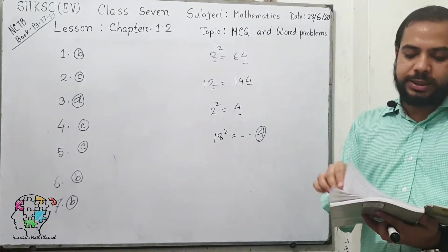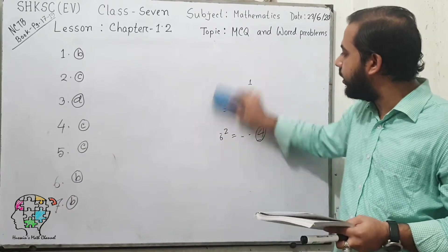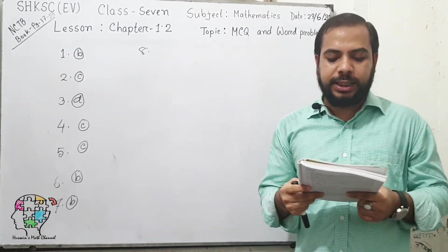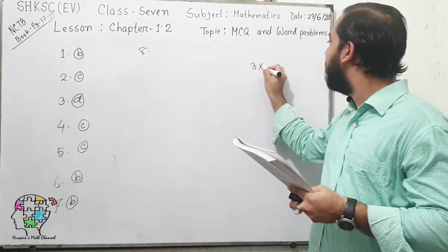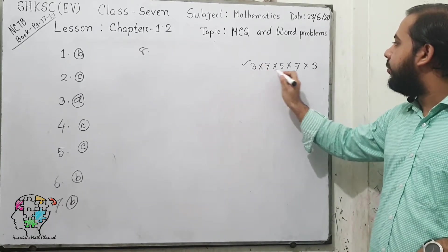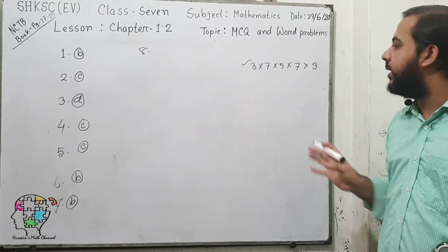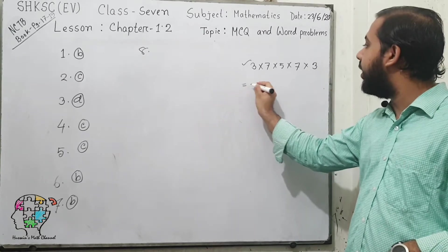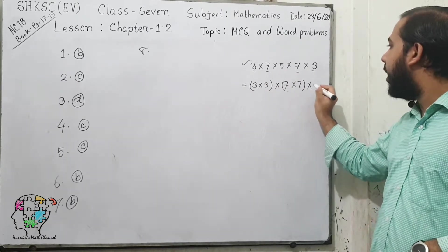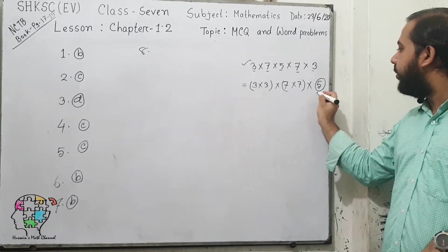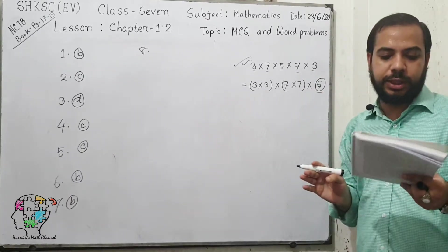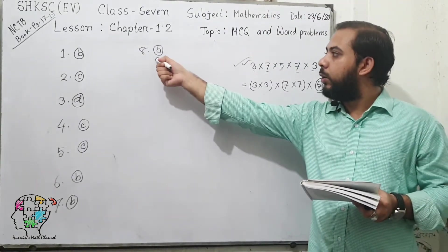Now move on to page number 18 for another MCQ. Question number 8: by which number should the multiplication or division of 3×7×5×7×3 be done to make it a perfect square? To make it a perfect square, we need to find pairs. 3 has a pair and 7 has a pair, but 5 is the only number not in a pair. So if we multiply or divide the total number by 5, it will be a perfect square. The answer for question 8 is option B.